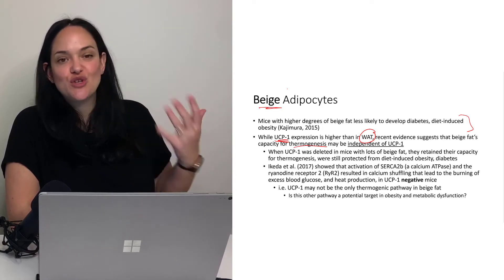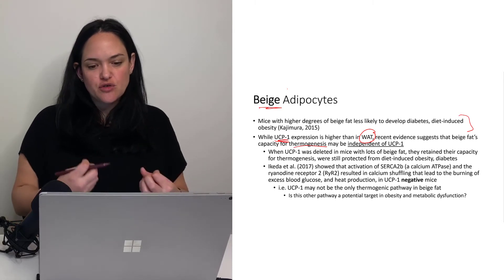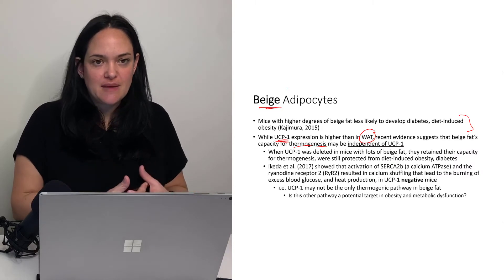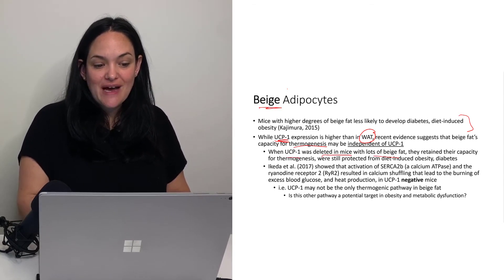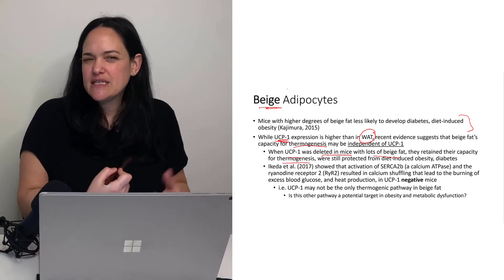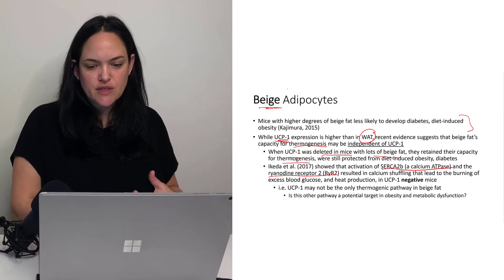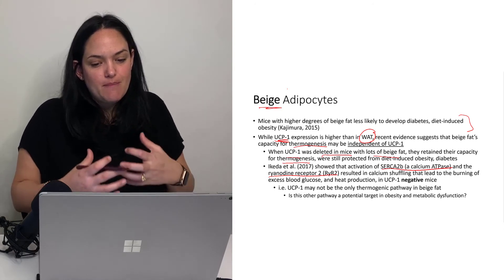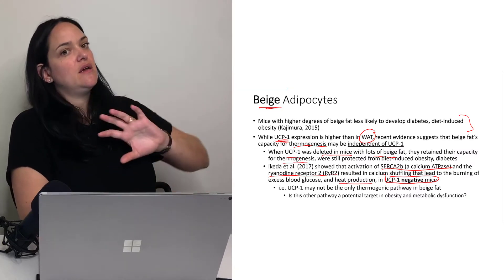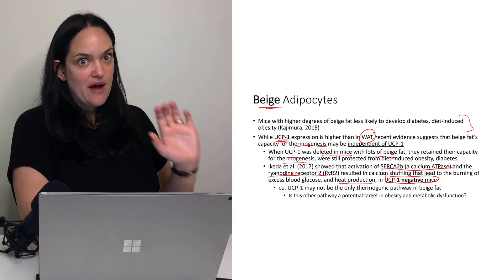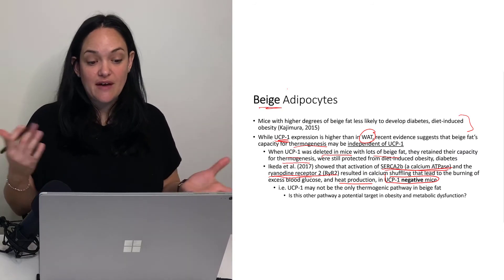It's important to always realize that we're still learning, especially when it comes to the anatomy and physiology of obesity — we still have a lot to learn. We're still trying to figure out what exactly is leading to the full thermogenic capacity of beige adipocytes. For instance, when UCP1 was deleted in mice with lots of beige fat, they still retained their thermogenic capacity, which suggests something else is going on. One study showed that activation of a certain calcium ATPase and ryanodine receptor was perhaps part of the mechanism that promoted heat production in those UCP1-negative mice.